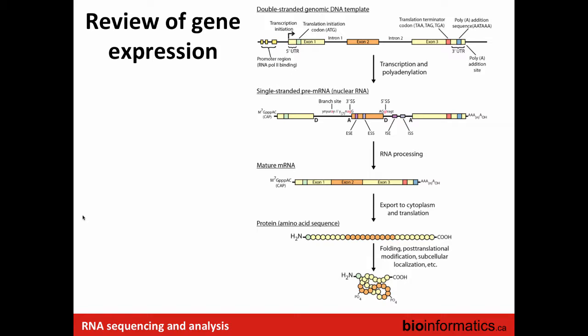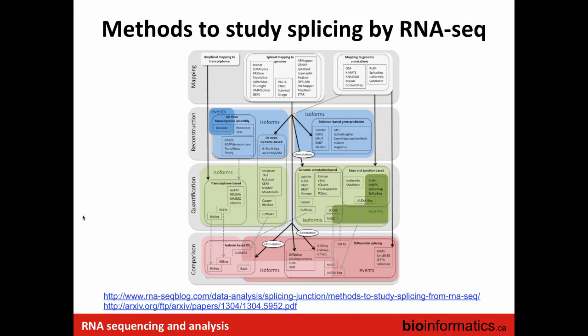For most genes in species like human, when you go from a pre-mRNA molecule to an mRNA molecule, there are often multiple different paths that can be taken. You can get isoforms that differ sometimes quite substantially in their exon content. There are quite a few methods that have been developed to study splicing by RNA-seq.